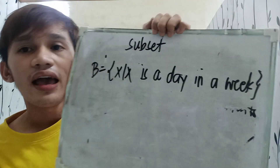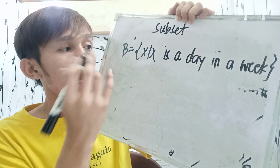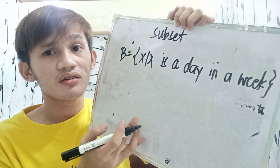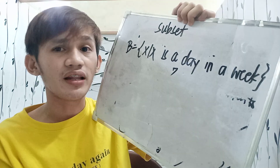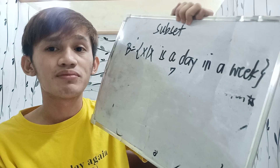Suppose SET B equals X such that X is a day in a week. How many days do we have in a week? We have 7 days: Monday, Tuesday, Wednesday, Thursday, Friday, Saturday, and Sunday. So we have 7 days.